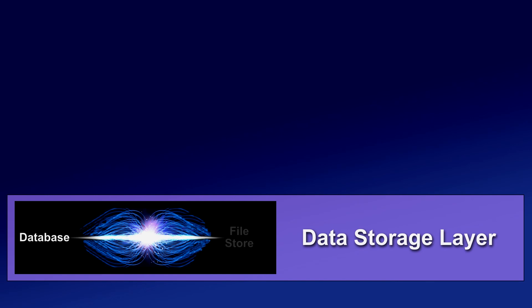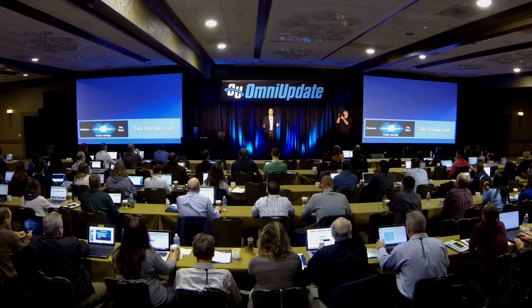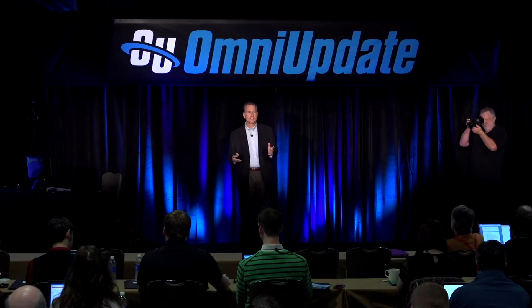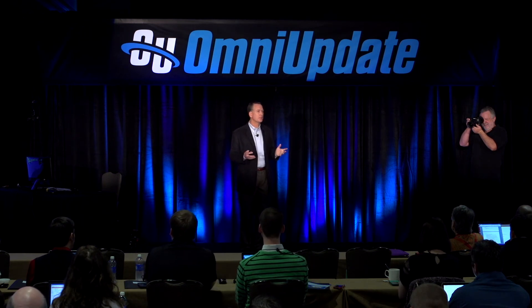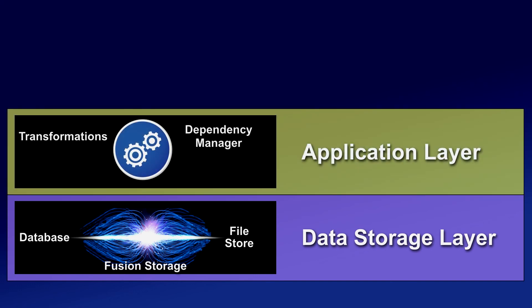To remind you how we built version 10 and why we could even do this: at the very base, at the very foundation, is the data storage layer. This isn't the most sexy part of the product, but it's actually the thing that gives us the most speed and performance for very large sites, very large files, and very large activities like site-wide publishing. This is where we combined a traditional database along with the file store of all the files — those millions of pages and content chunks being edited — and merged those together into our Fusion storage technology. On top of that is the application layer.